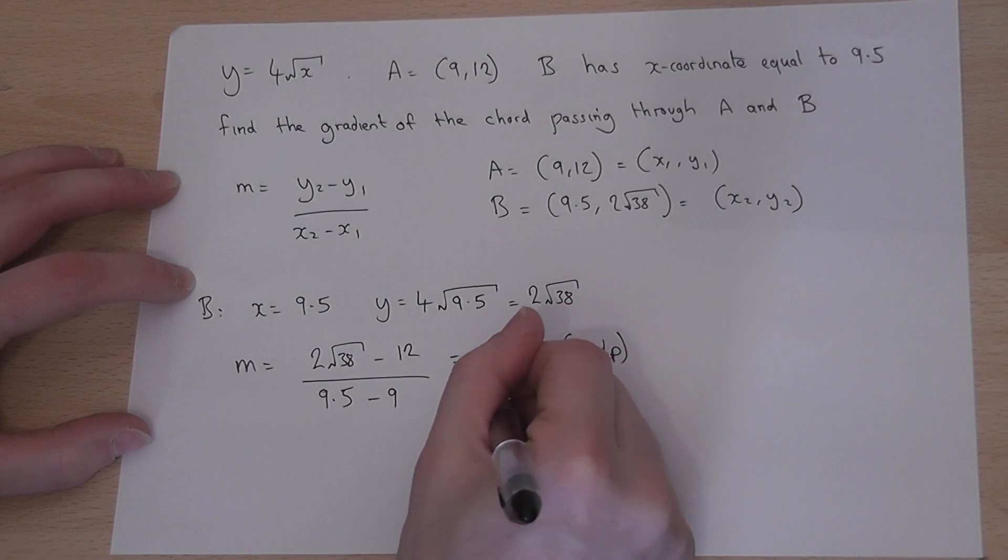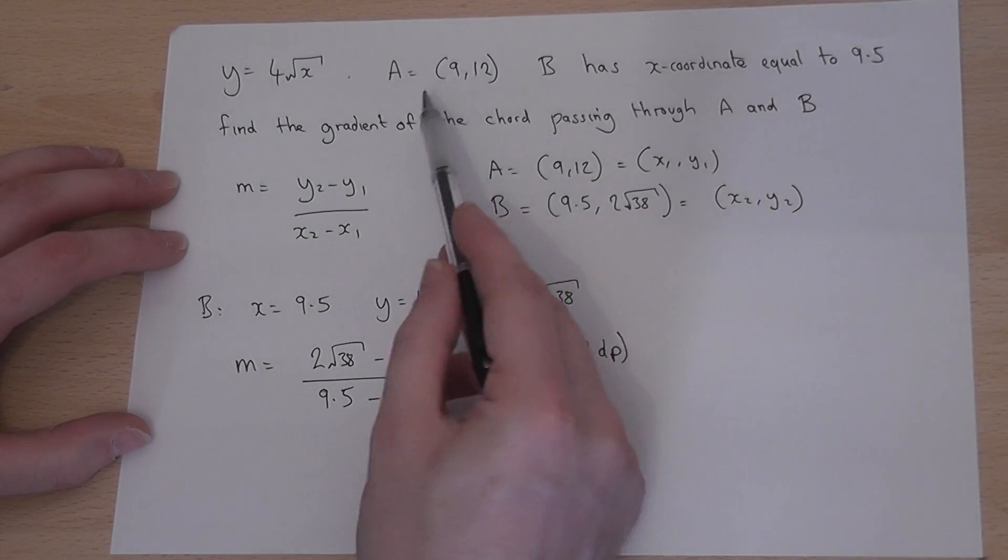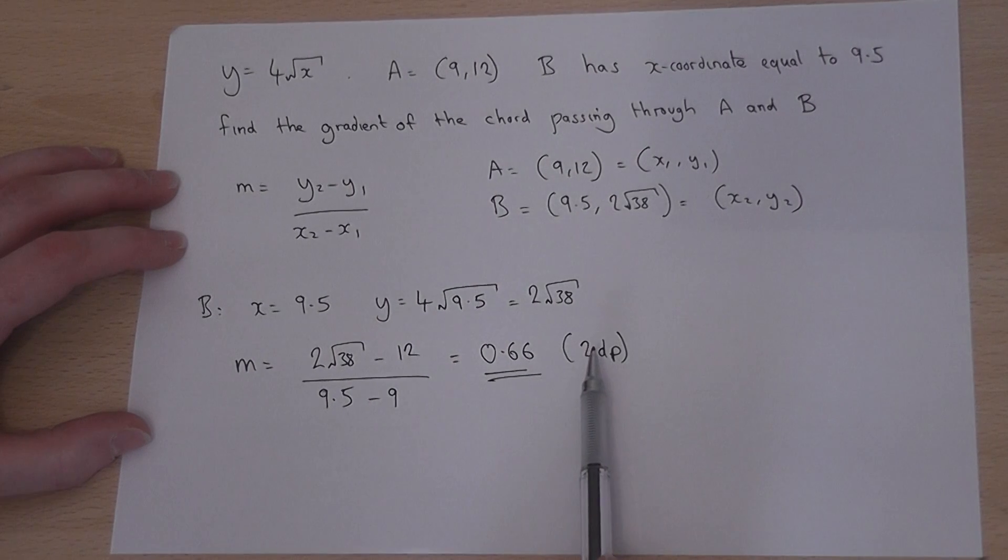So, the gradient of the chord between A and B is 0.66 to 2 decimal places.